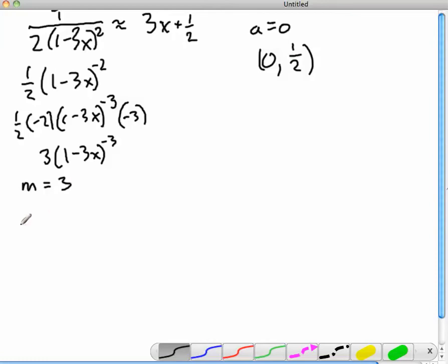So now I have a point, and I have a slope. So if I do point-slope form, y minus 1 half is equal to 3 times (x minus 0).